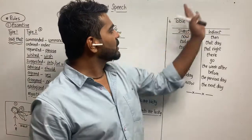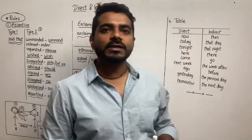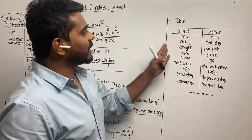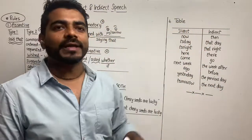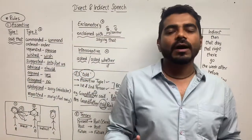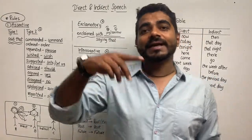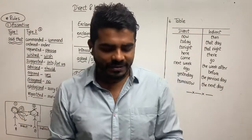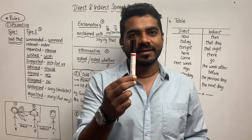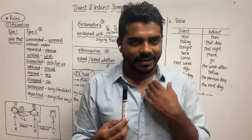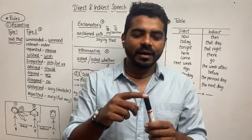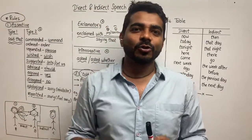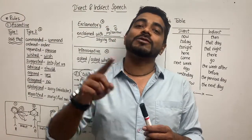The fourth point is regarding words that change from direct to indirect speech. There are many words that change when something is being said directly versus when it is reported later by someone else. For example, if I'm telling you 'this pen' right now, when you tell this to your friend, you will not say 'this pen' — you have to say 'that pen'.